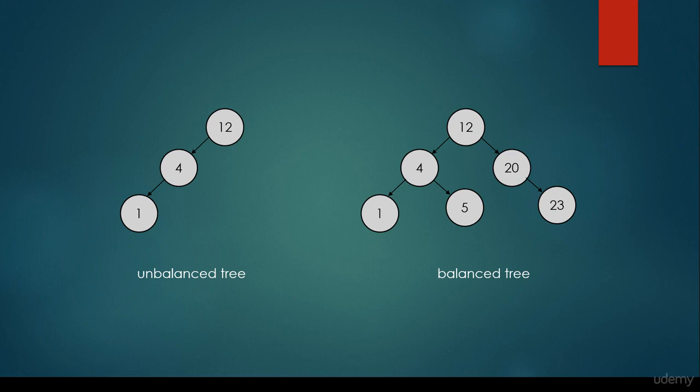This is an unbalanced tree on the left — we have the root node, it has a left child, and the left child has another left child, so it is not balanced. The number of left children is not equal to the number of right children. The tree-like structure on the right is going to be balanced, because the number of right subtrees and left subtrees are going to be approximately equal. For balanced trees, the operations' running time will be favorable — logarithmic. For an unbalanced tree, we can end up with O(n) linear time complexity, and we don't want to end up with a data structure that has the same running time as the linked list.